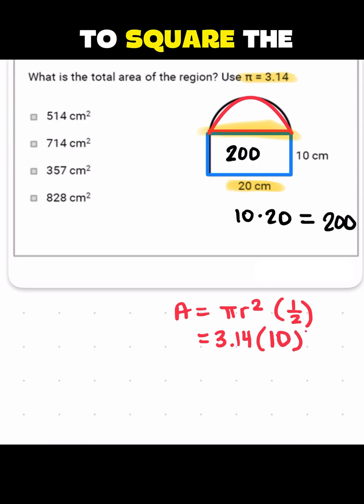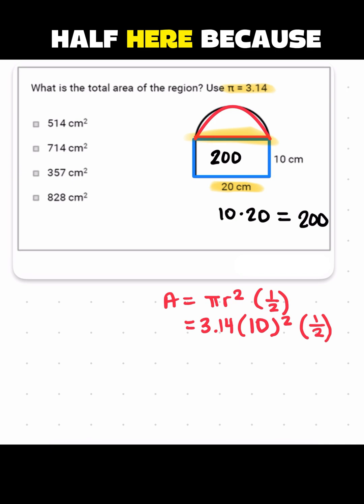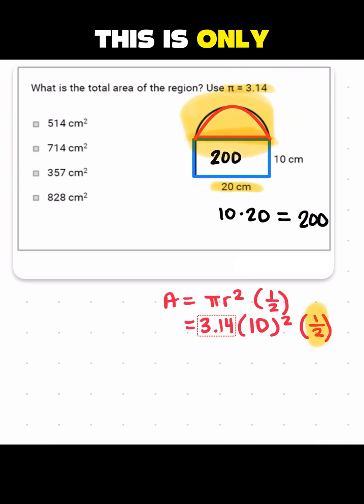Then we have to square the radius and then take half of that final answer. Now remember, we're doing this half here because this is not a full circle. This is only half of a circle. So keep working here. You can use a calculator for this part, but I'm just going to do it by hand. So 3.14, 10 squared is 100.